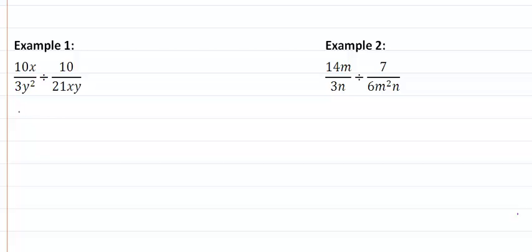In example one, first thing that we need to do is rewrite as a multiplication problem. So that means we get 10x over 3y² times 21xy all over 10.